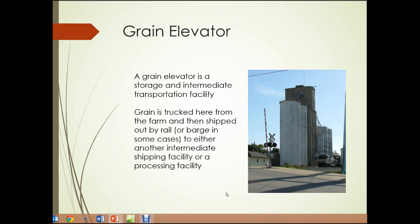A grain elevator, such as shown in this picture, is a storage and intermediate transportation facility. Grain is trucked here from the farm — corn, soybeans, wheat, whatever type of grain is produced locally — and then shipped out by rail or barge, in cases where the grain elevators are located on rivers or lakes, to either another intermediate shipping facility or a processing facility.